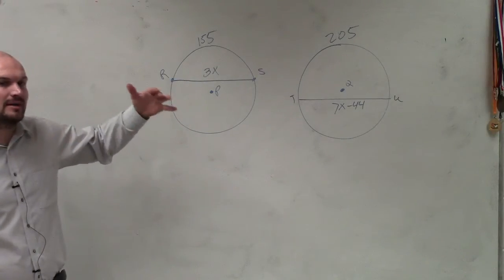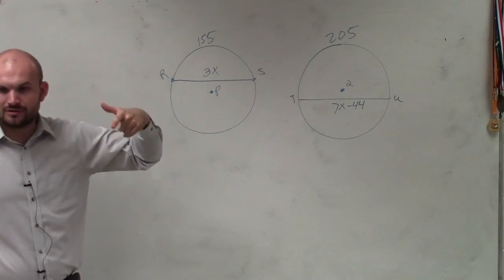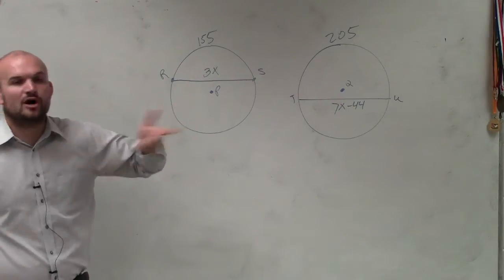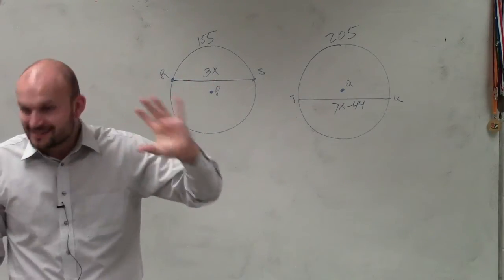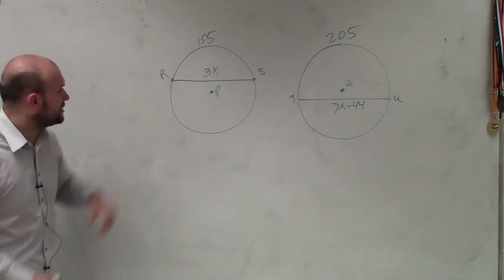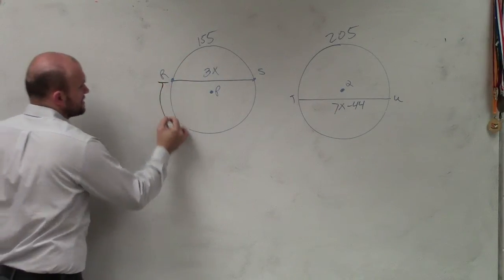Now remember, ladies and gentlemen, the distance around a circle, the measure of the sum of all the central angles adds up to 360. So if this is 105, what is this? 155.